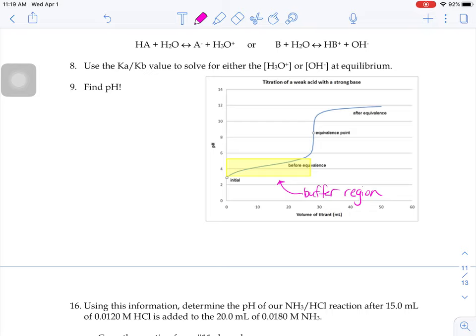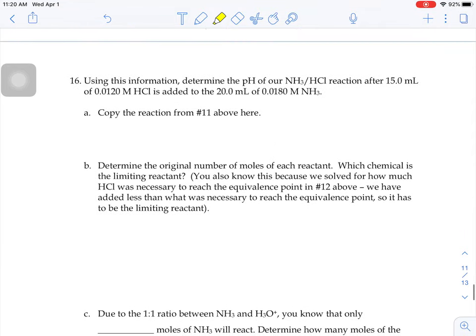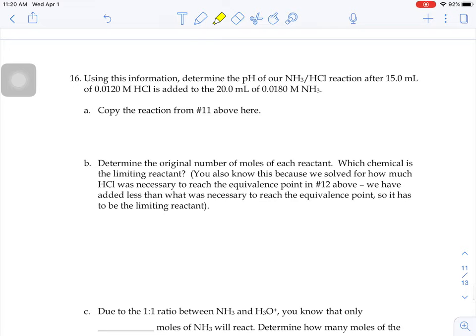This particular graph is up here, weak acid, strong base. Ours is the reverse. Our graph looks something like this. So here's the equivalence point we're focusing on. We've started the titration, but we're not at the equivalence point yet.